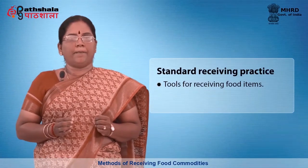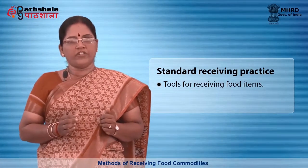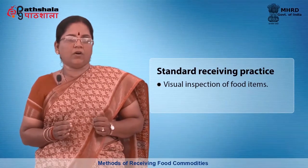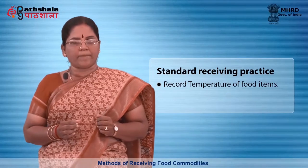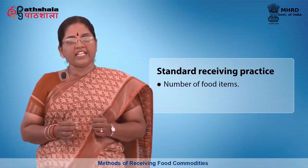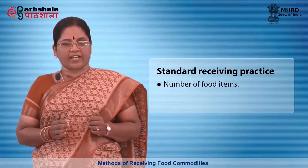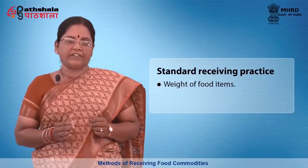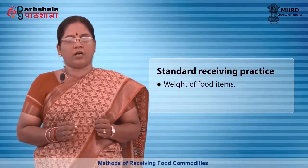Next we will see the standard receiving practices. A set of standard receiving practices should include the following: plan for delivery and have tools for receiving ready; visually inspect all items and look for signs of container damage; check and record temperatures of frozen and refrigerated items; count each item that can be counted, such as number of cases or number of individual items; and weigh each item delivered by weight, such as meat — approved weighing scales must be provided.